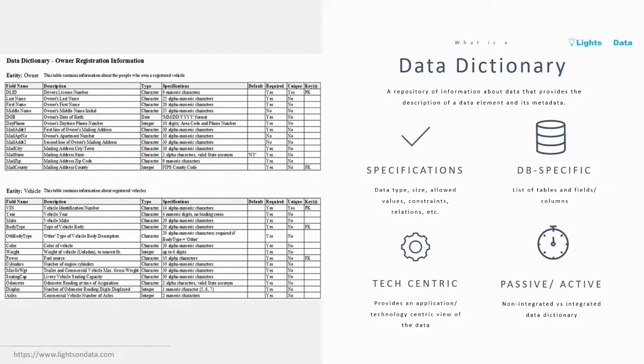The data dictionary and the business glossary, they do talk to one another quite a bit. For the most part, sometimes organizations just choose to merge them into one, and depending how you want to tackle it, it can be done. The data dictionary provides a very application or technology-centric view of the data. It provides the description of a data element and its metadata, and you can have many data dictionaries, one for each application or system. But for the business glossary, I haven't mentioned that before, you usually just have one for the entire organization. There's also the concept of a passive data dictionary and an active data dictionary, which I won't cover now. But when a passive data dictionary is updated, it's done so manually and independently from any changes to the database structure. With the active data dictionary, the dictionary is updated first and changes occur in the database structure automatically as a result.